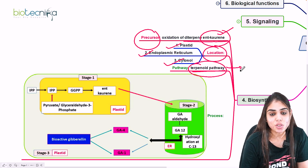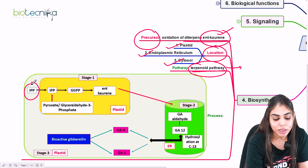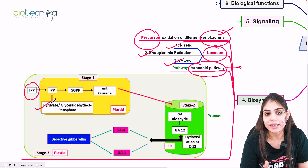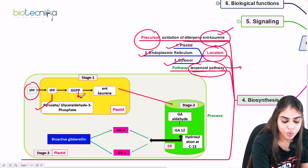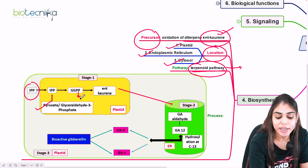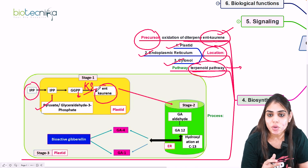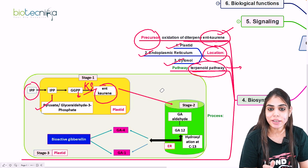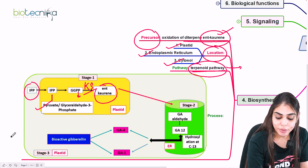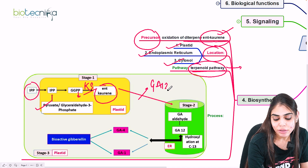The pathway starts with IPP (isopentenyl pyrophosphate), which diffuses from the cytosol into the plastid, coming either from pyruvate or glyceraldehyde-3-phosphate. IPP is converted to GGPP (geranylgeranyl pyrophosphate), which is further converted into ent-kaurene in the presence of kaurene synthase enzyme. This kaurene synthase causes the conversion of GGPP into ent-kaurene. Finally, ent-kaurene is synthesized and diffuses into the ER, where it is oxidized and converted to GA12-aldehyde.